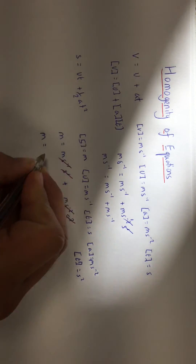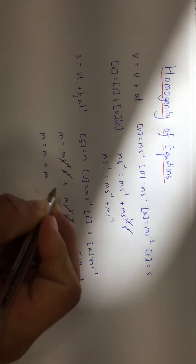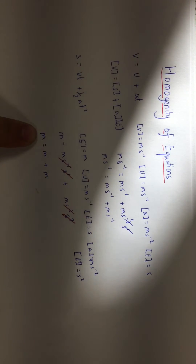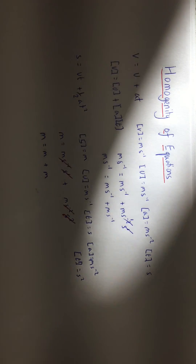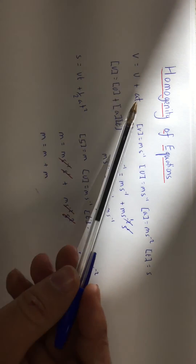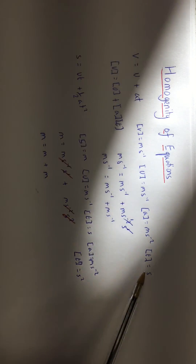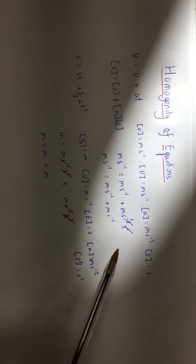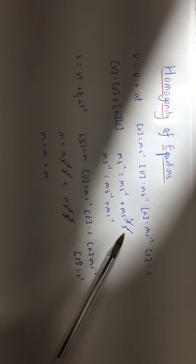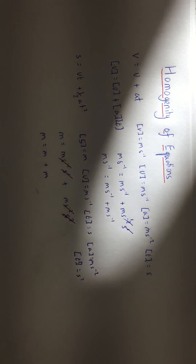Breaking it down, we have metres on both sides, so the equation is homogeneous. You can do this for any equation, but it's really important that the units on each side must always match. Follow this process: write the equation, write what each of the units are, then substitute the units into the equation and cancel through the powers until you can show they are the same on each side.